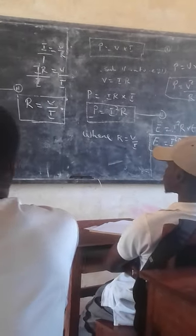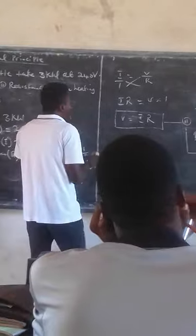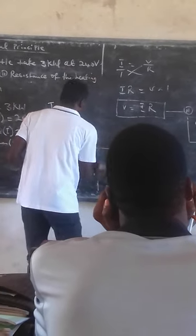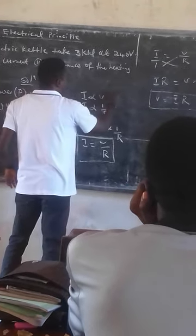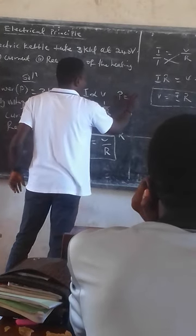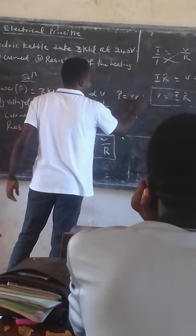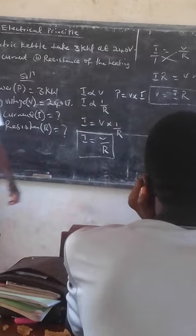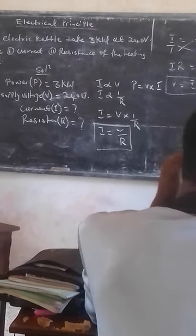We say P is equal to V times I. That is the reason why I came to all of this equation, the first equation for power.